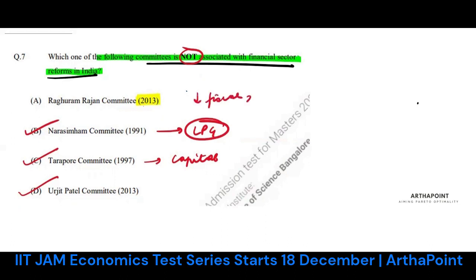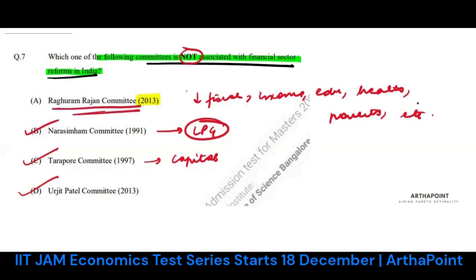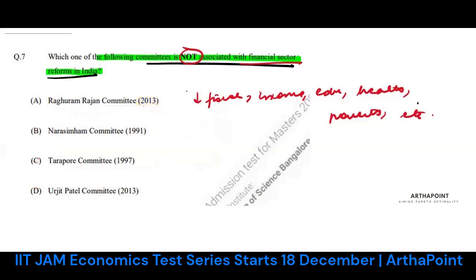The 2013 Raghuram Rajan Committee aimed at 10 clusters which included income, education, health, poverty, and household index. The aim was to reduce inequality, help least developed states, focus on human development index, reduce the poverty gap, and focus on a multi-dimensional index. It was not related to the financial sector. So the answer to question number seven is A.